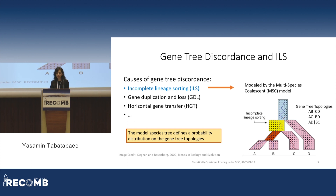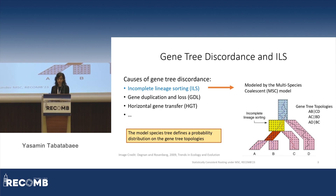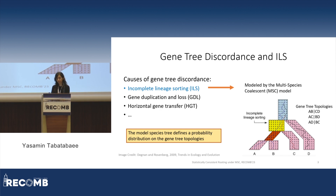This is called gene tree discordance, which can have several causes — for example, incomplete lineage sorting or ILS, gene duplication and loss, and horizontal gene transfer. In this talk, we will only focus on ILS, which can be modeled by the multi-species coalescence model or MSC. MSC models a random process that describes the way alleles coalesce in populations. When two lineages fail to coalesce at their common ancestor, as shown in the yellow box in this figure, it results in incomplete lineage sorting that can create gene tree discordance.